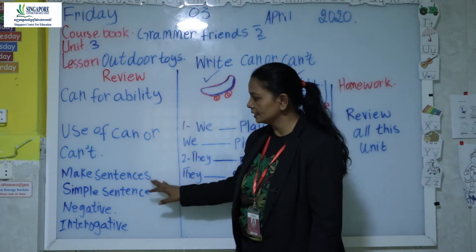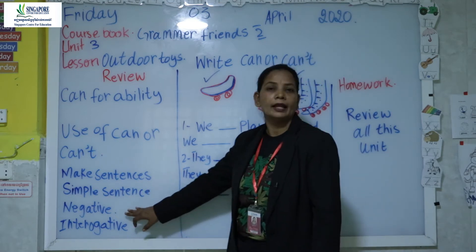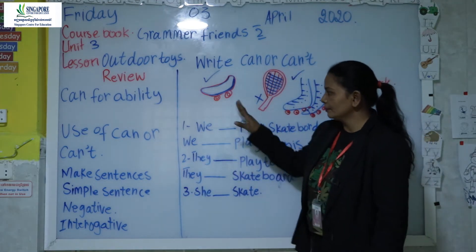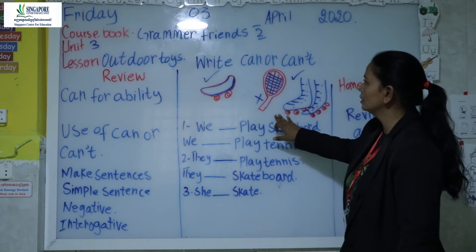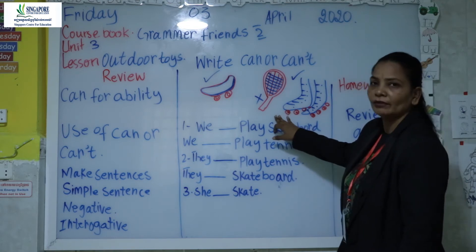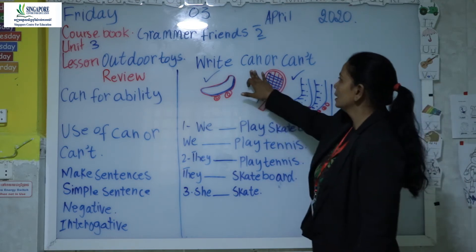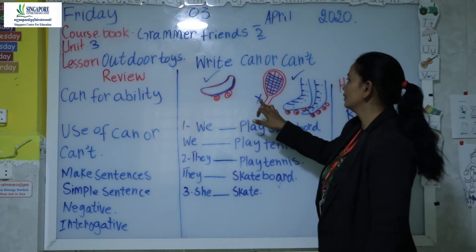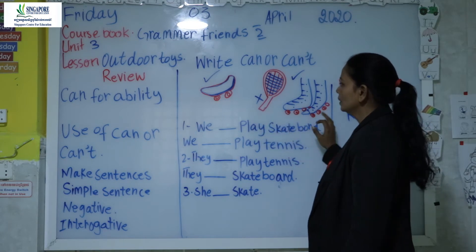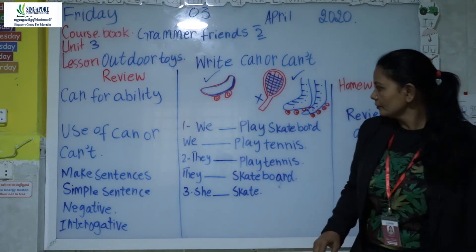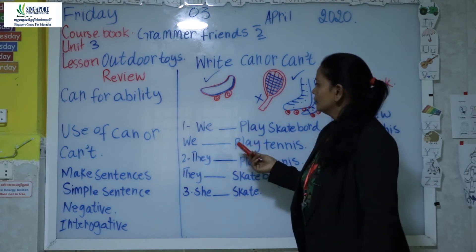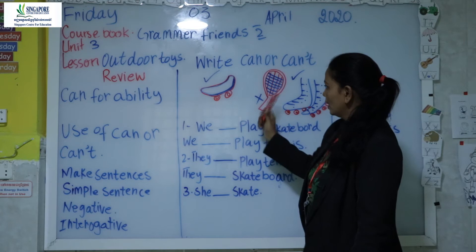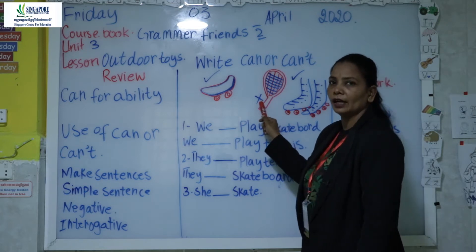So we have simple sentences — negative and interrogative. In this box, we have to use 'can' or 'can't' by looking at the tick and cross. A tick means 'can' and a cross means 'can't'.